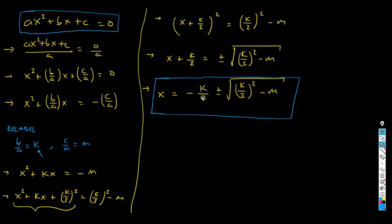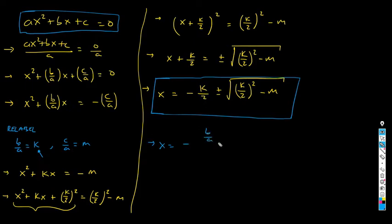Everything on the right side of this formula is nothing but k, m, and the number 2, and some square roots. So we can conclude that this is a perfect solution — we are done. Now the rest is simply substituting k for what it is. For example: minus k over 2 — what is k? k is b over a — over 2. Plus or minus the square root of k, which is b over a, divided by 2, all of that to the square.